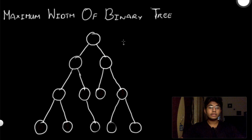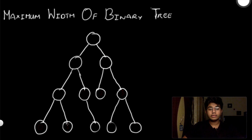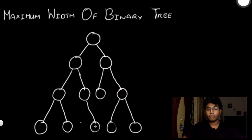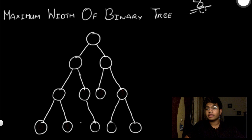Let's say we're given this binary tree. Our output is going to be: one, two — considering a null node — three, four — which also has two null nodes — so we add five and six, then seven and eight. Our output is going to have a value of eight. Let's see how we can reach this value.